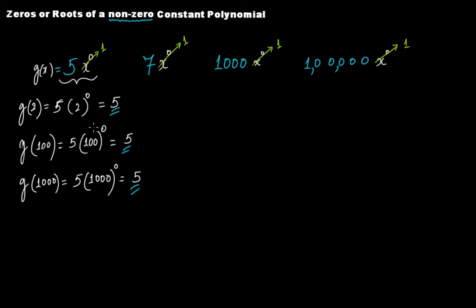You're never going to get zero. Since you can't get zero, you can't have zeros or roots for a non-zero constant polynomial. No matter what value you put, the expression — variable raised to the power of zero — will always be one. For seven, you'll always get seven; for thousand, you'll always get thousand. You'll never get zero. Since the polynomial can never become zero, it can never have a zero or a root. That's why we say that zeros or roots of a non-zero constant polynomial do not exist — there are no zeros or roots. The reason is it will never become zero.